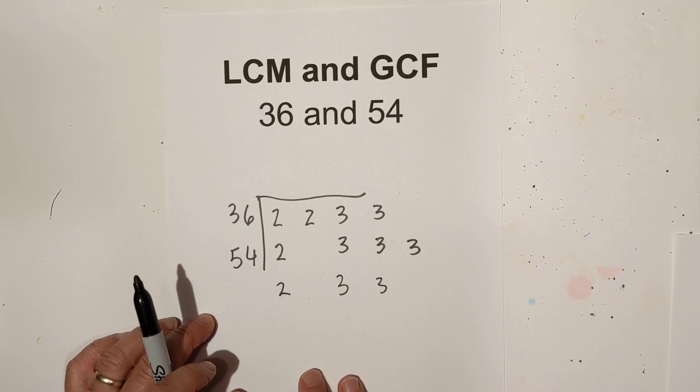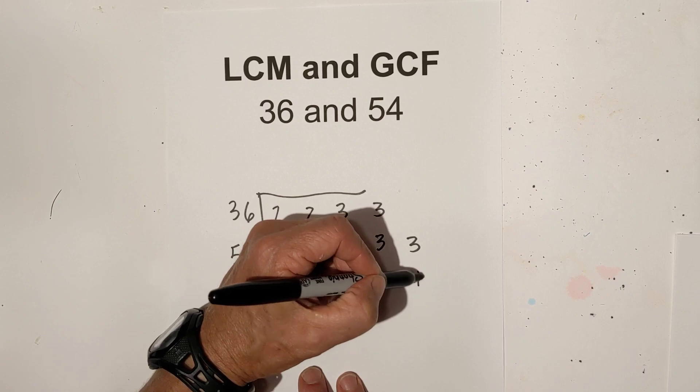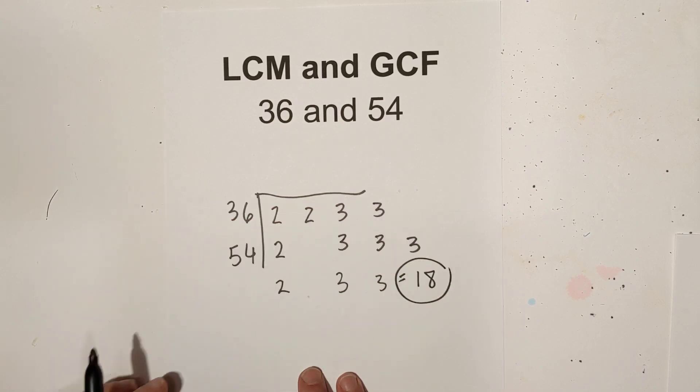Then multiply these together: 2 times 3 is 6, 6 times 3 is 18. So the greatest common factor is 18.